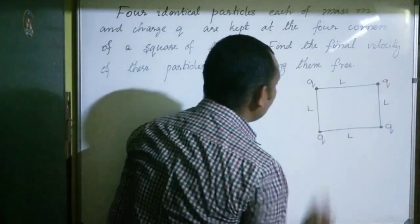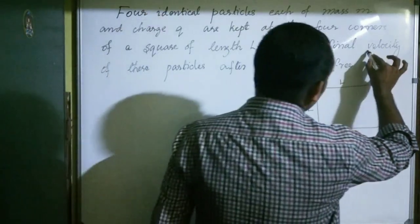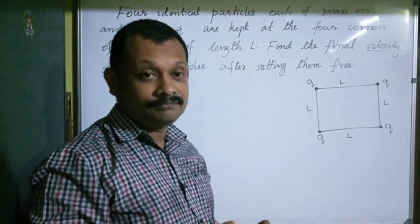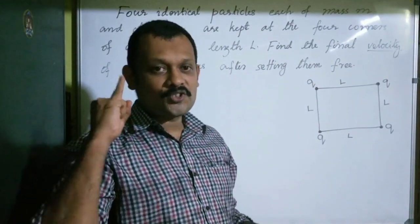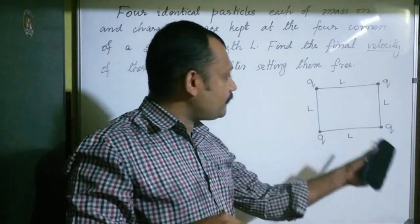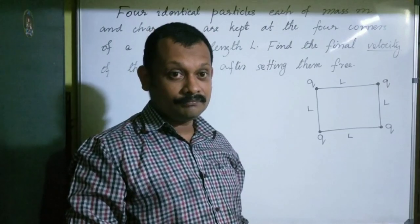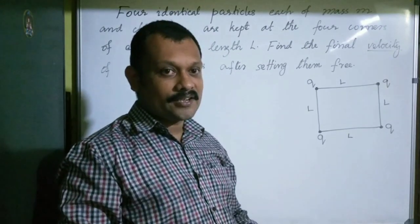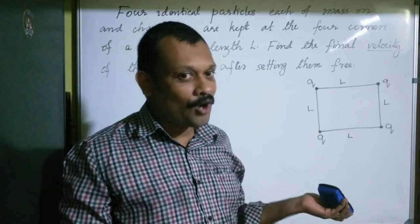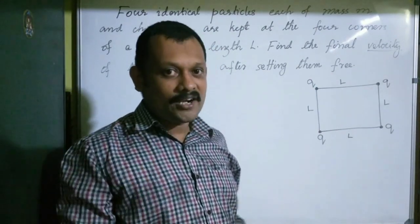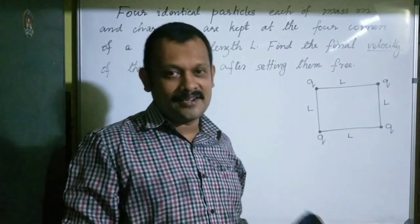Now we need to find the final velocity. You can use two methods: either write the force on each particle, find the acceleration, and then find the velocity; or use energy conservation. Energy conservation is going to be the easier method here.